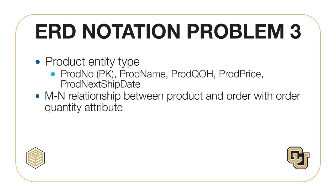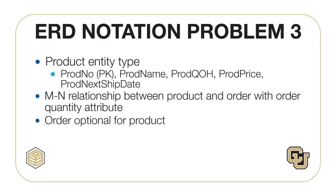For the Product entity type, you should add attributes for ProdNumber (the primary key), ProdName, ProdQuantityOnHand, ProdPrice, and ProdNextShipDate. For the many-to-many relationship, you should add an attribute for the order quantity. You should choose an appropriate relationship name using your common knowledge of connections between products and orders, then define minimum cardinalities so that an order is optional to a product and a product is mandatory to an order.